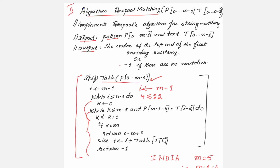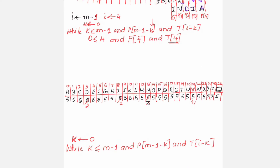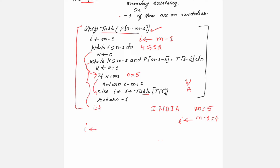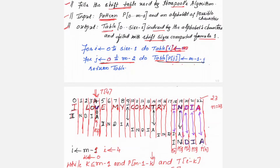After exiting the inner while loop, we check if k equals m: k is 0 and m is 5, so this is false. The else part executes: increment i by the shift table value for the current text character. The mismatched character is 'v'; its value in the shift table is 5. So the new i = 4 + 5 = 9.